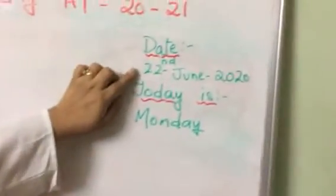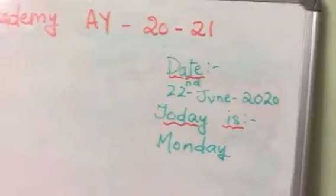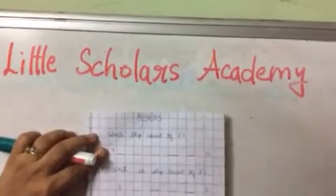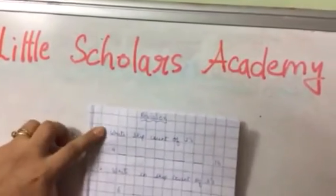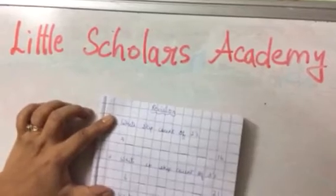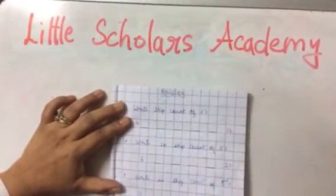Aaj kya karenge ham? Today is Monday, 22nd June 2020. Aaj hum kar rahe hain revision of skip count. May ne aapko ye questions diye hain. Woh humnye skip count kerke likhne hain. Skip count kya hota hai? Jab hum numbers jump kerke likhte hain.